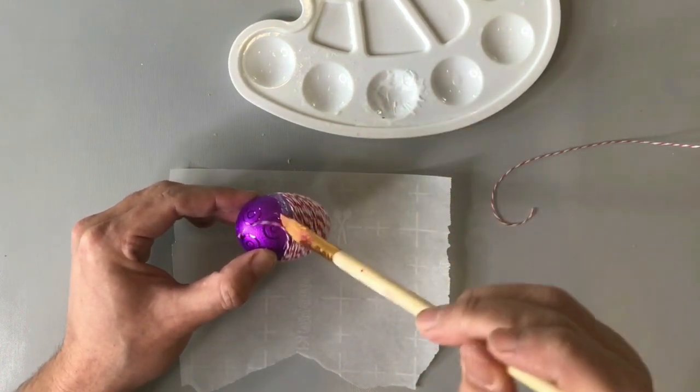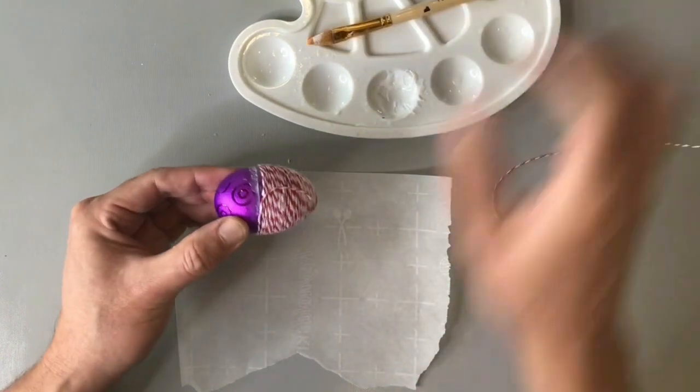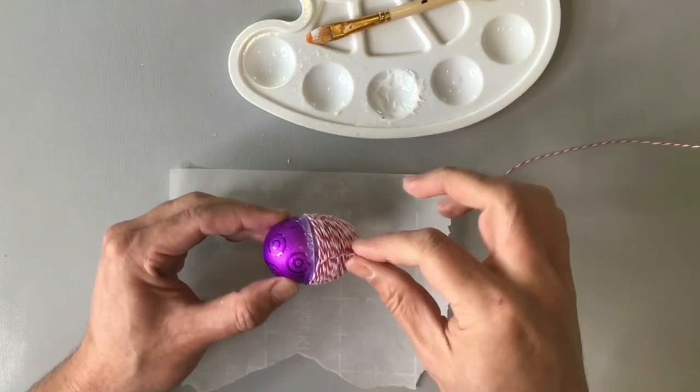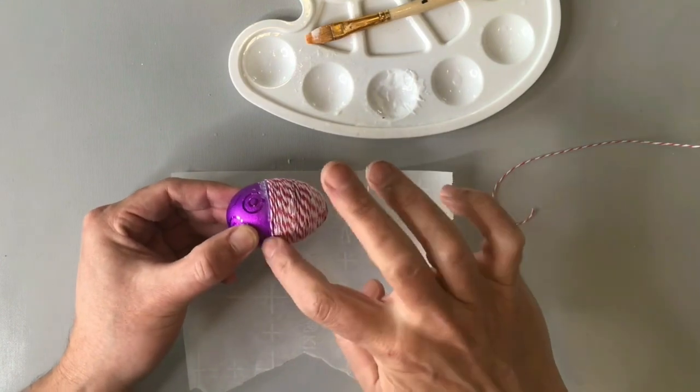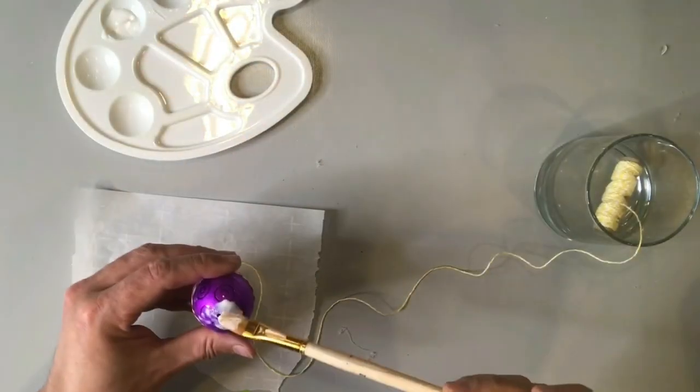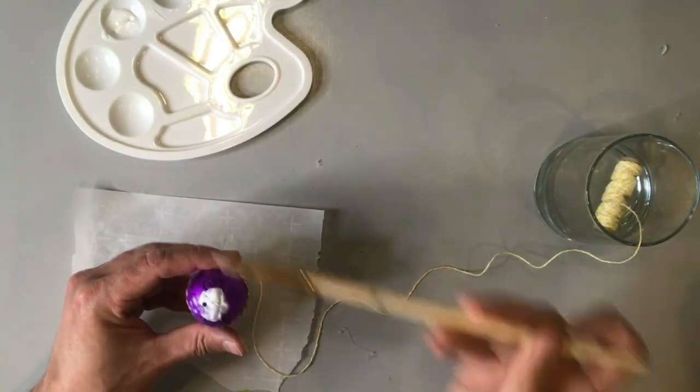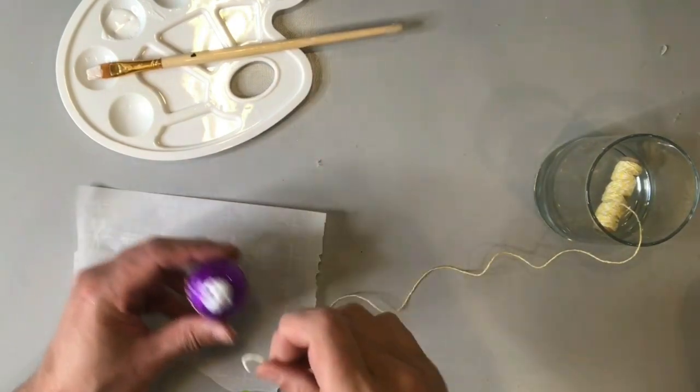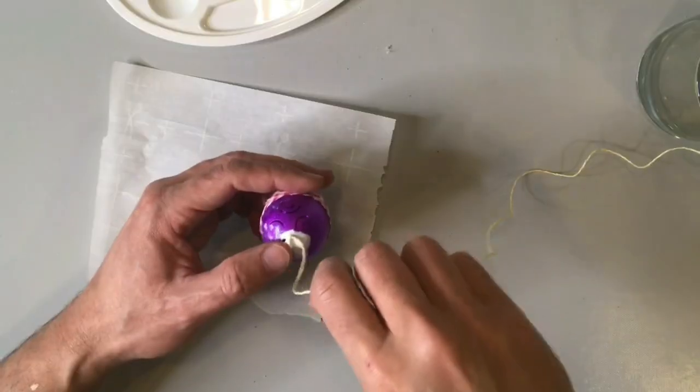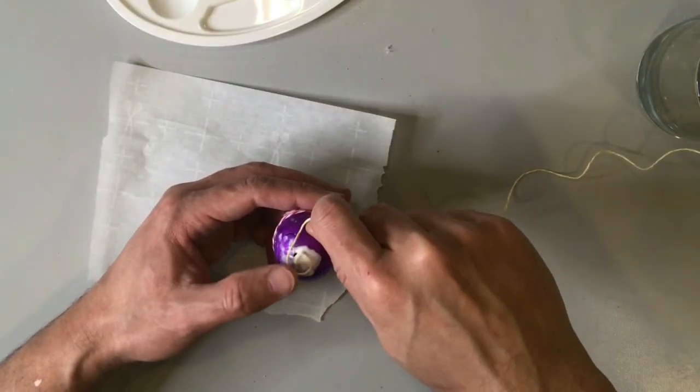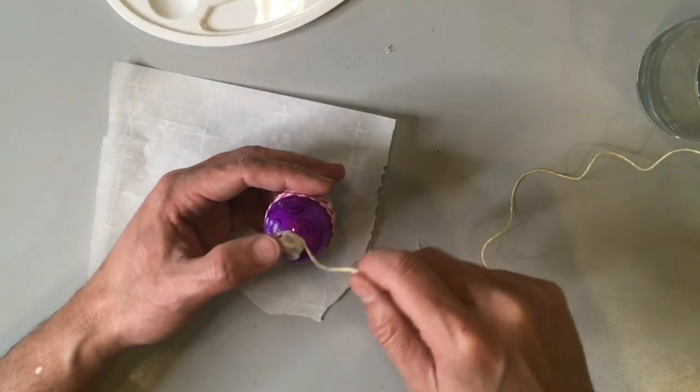Now, once our first color is in place, our first color of Baker's Twine, I'm now going to add another color of Baker's Twine starting at the opposite end of the egg. So I'm using the same technique here starting at the other end of the egg with our tacky glue and with just kind of wrapping our Baker's Twine around very carefully and adding more tacky glue as we go.